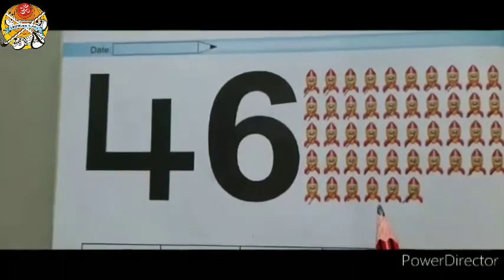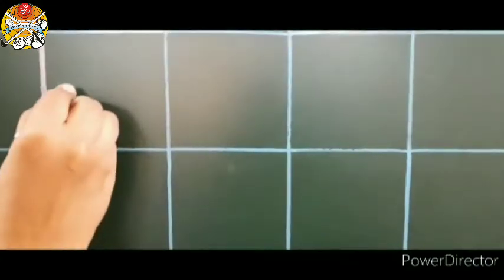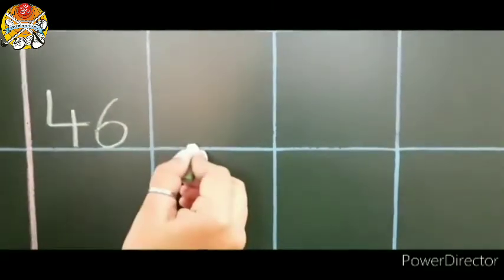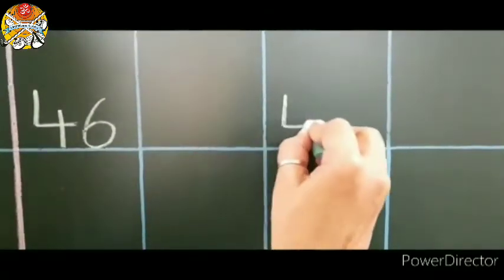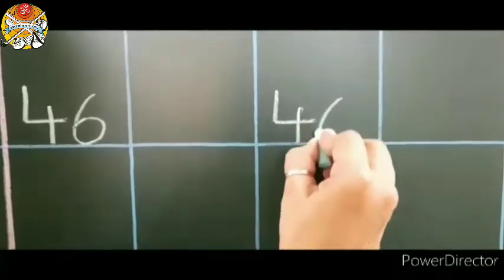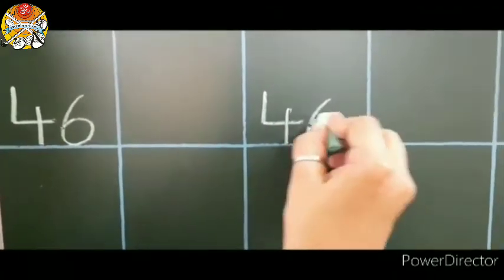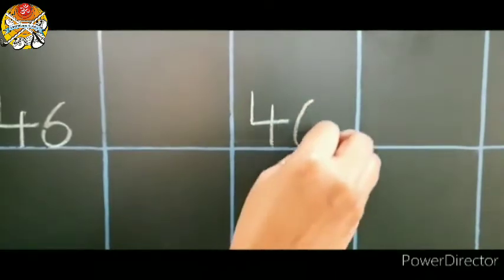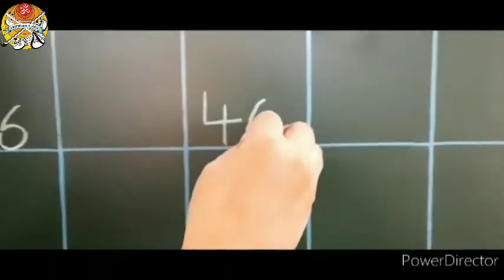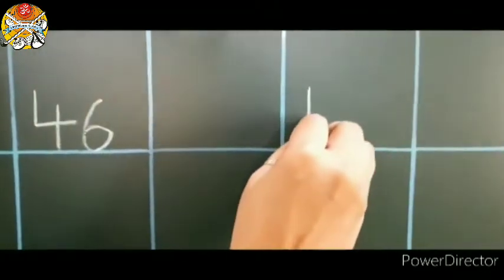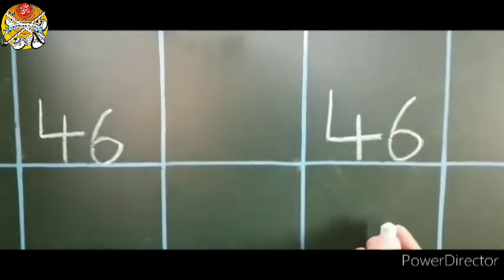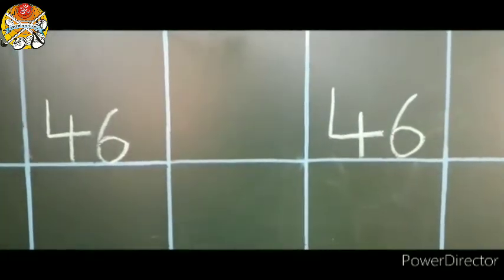Now let's learn how to write numeral 4, 6, 46. In the first box, we will write numeral 4, 6, 46. Leave one box. In the next box, again we will write 4, 6, 46. Again leave one box children. In the next box, 4, 6, 46. Let's write one more time. Leaving one box. In the next box, 4, 6, 46. Okay children, like this you all have to write in your notebook.